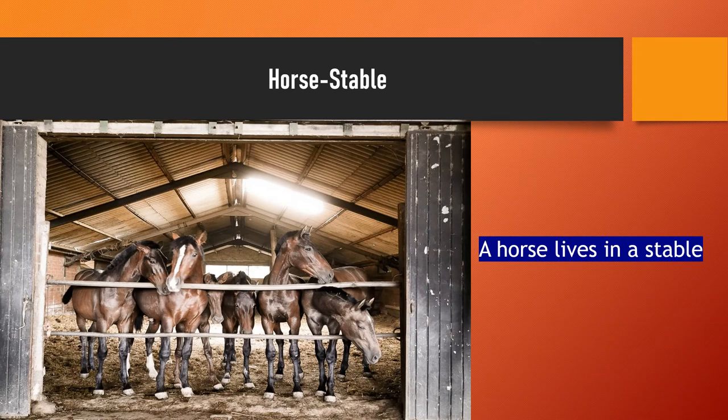Here we can also see that there are many horses and they are living in a stable. So where does a horse live? A horse lives in a stable. The home of a horse is called a stable. H-O-R-S-E, horse. And S-T-A-B-L-E, stable.